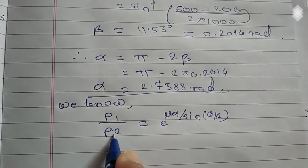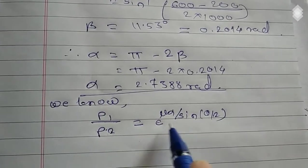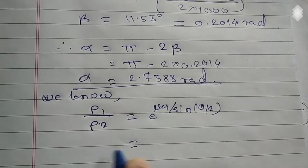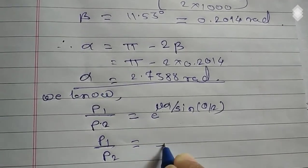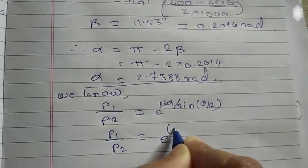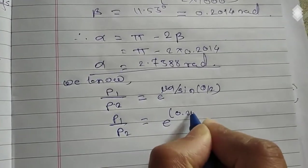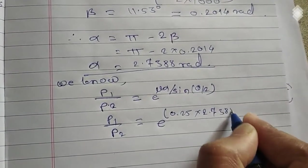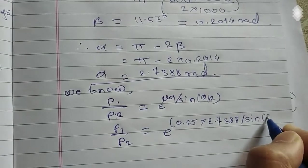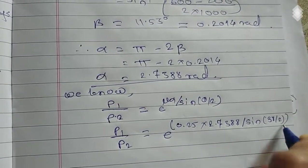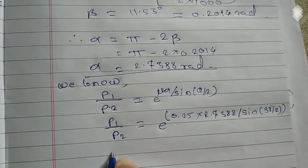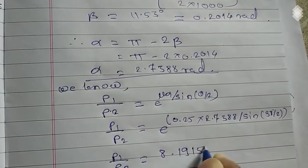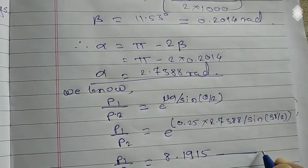Here we know limiting tension ratio is equal to e raised to mu alpha divided by sin of theta by 2. So P1 upon P2 is equal to e raised to mu is given, that is 0.25 times alpha, we have already done that calculation, divided by sin of 38 divided by 2. So we get P1 upon P2 is equal to 8.1915. Let us say this is equation A.